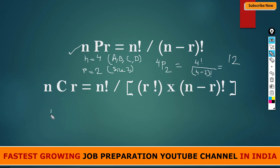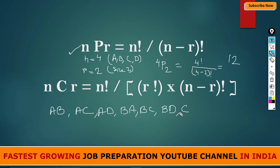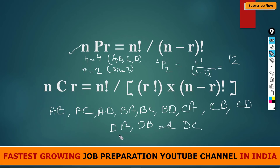Let us verify: with A, B, C, D we get AB, AC, AD, BA, BC, BD, CA, CB, CD, DA, DB, DC — that's 12 permutations. Note that AB and BA are both listed as different arrangements. This is the important thing that differentiates permutation from combination — AB and BA are two different identities in permutation.